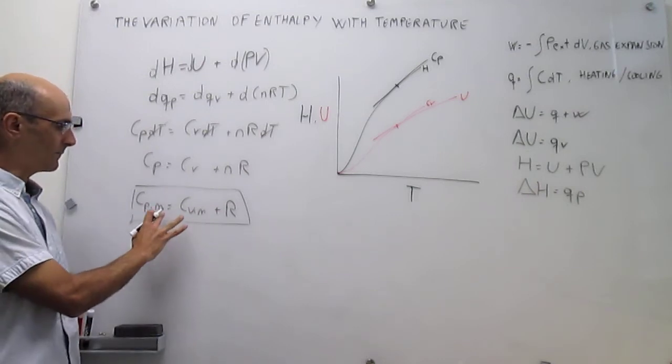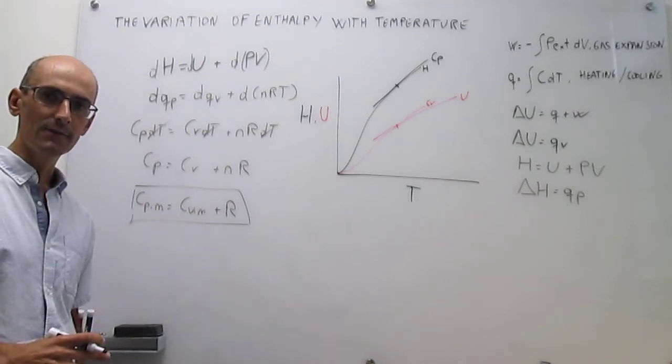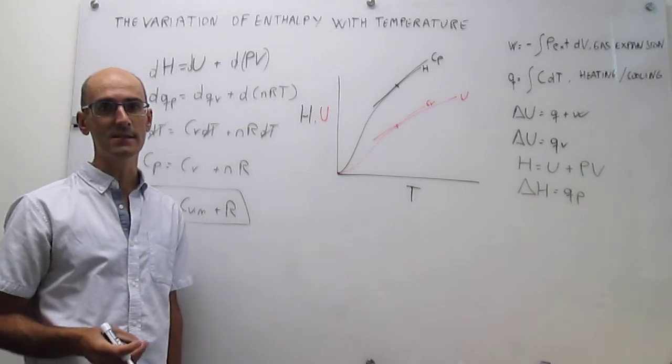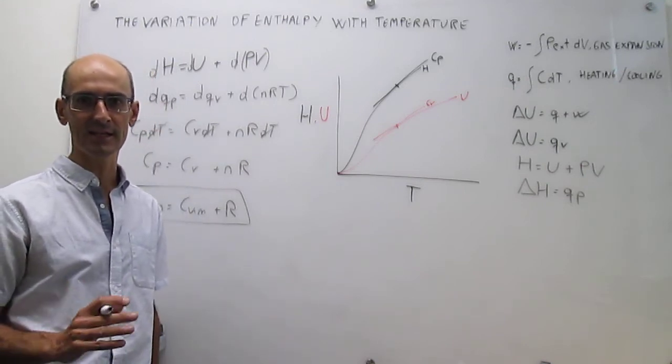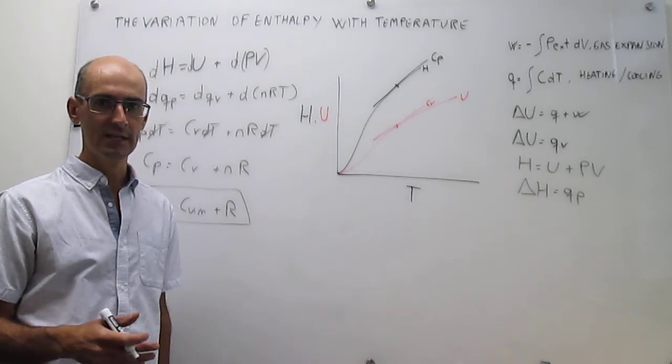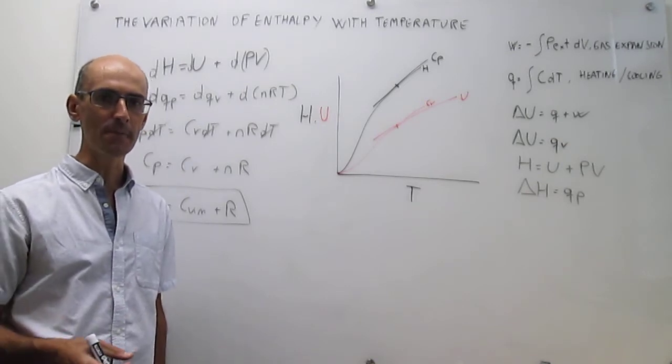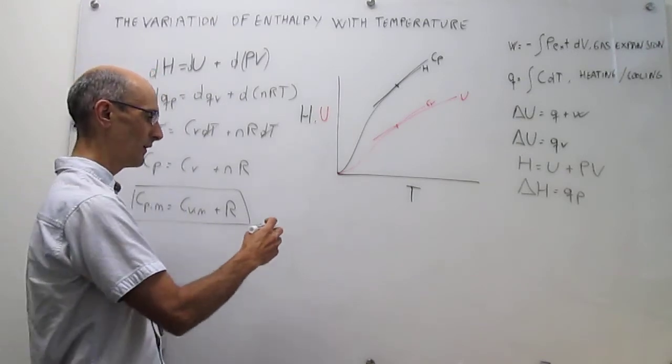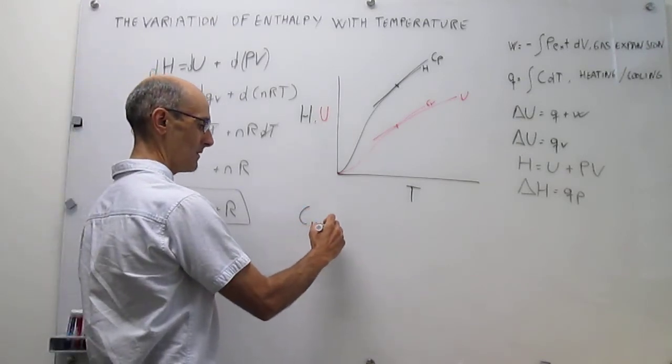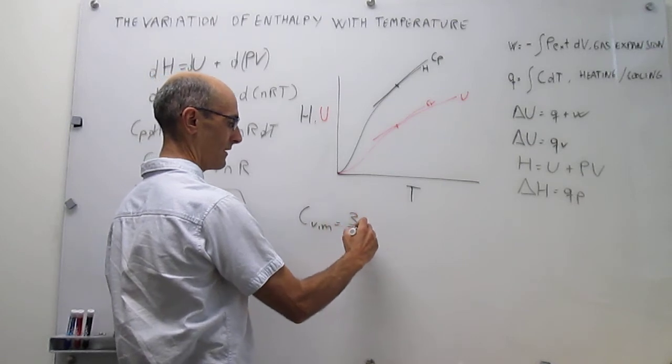So typical values for these heat capacities are as follows. For a monatomic ideal gas like argon or helium, or any ideal gas that has no internal structure, that means that it's just a single atom or you're neglecting bonds and so forth, it turns out that cvm happens to be three halves r.